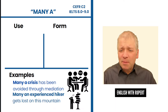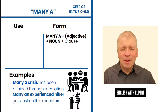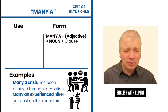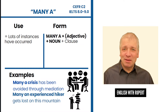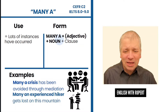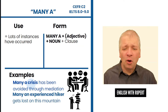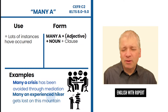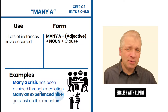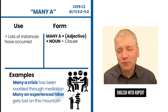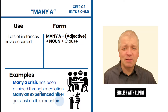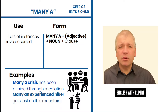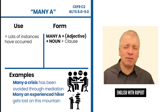So what is this phrase 'many a'? Many a, or many an, can optionally be followed by an adjective, then a noun, then the rest of the clause. What this means is lots of instances have occurred like this. 'Many a crisis' means lots of crises; 'many an experienced hiker' means lots of experienced hikers, or this has happened lots of times. Many a / many an is a useful way of starting a sentence to mean this has happened many times before.